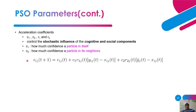c1 indicates how much confidence a particle has in itself (cognitive), and c2 indicates how much confidence a particle has in its neighbors (social). r1 and r2 are the stochastic influence controls for cognitive and social components respectively. y_ij is the personal best position, x_ij is the current position, ŷ_j is the best neighbor position. In terms of algorithm parameters: A is the population of agents, p_i is the position of agent a_i in the solution space, f is the objective function, v_i is the velocity, and N(a_i) is the neighborhood.